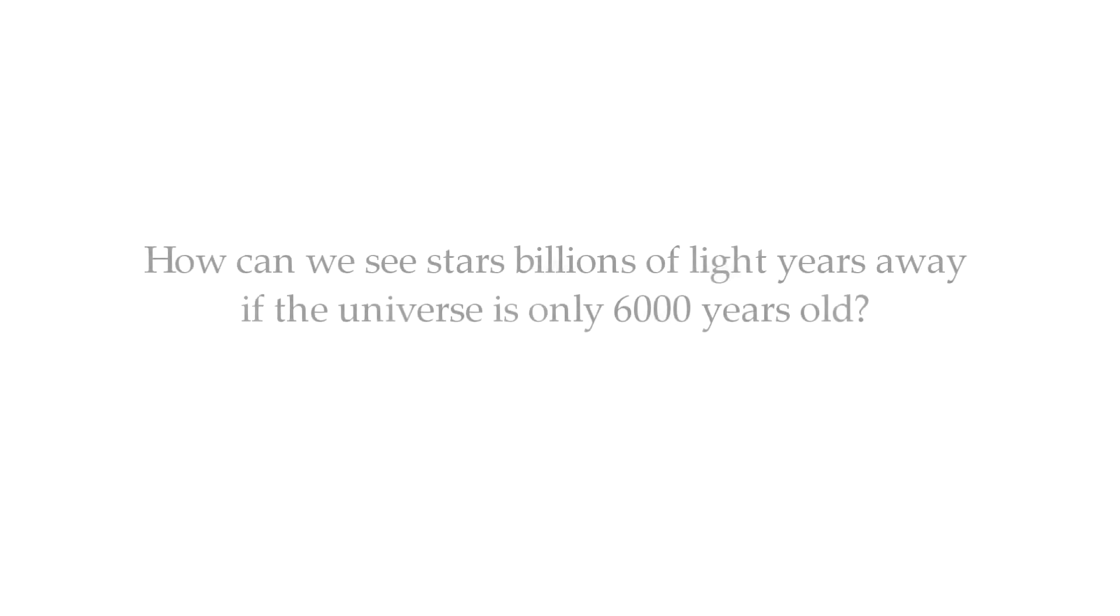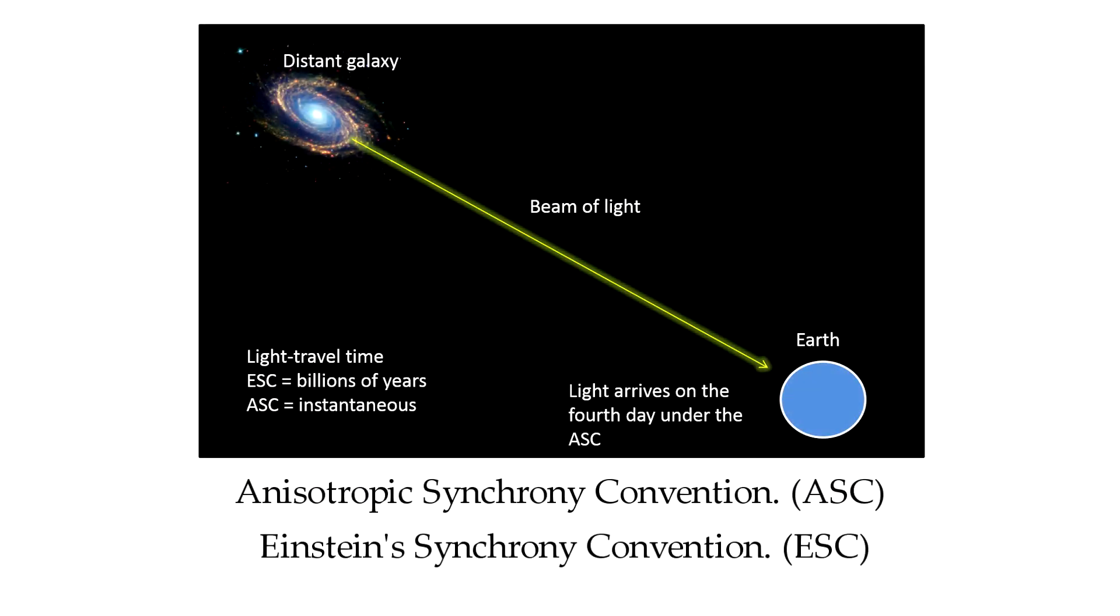But let's get back to the question. How can we see stars billions of light years away if the universe is only 6000 years old? While there are many theories to explain the distant starlight, for me the best answer is by using the Anisotropic Synchrony Convention instead of Einstein's Synchrony Convention.